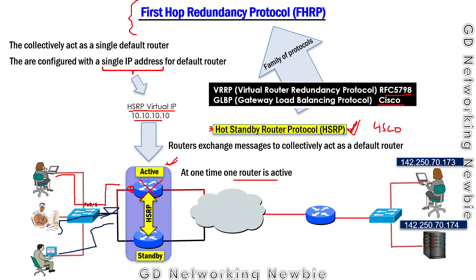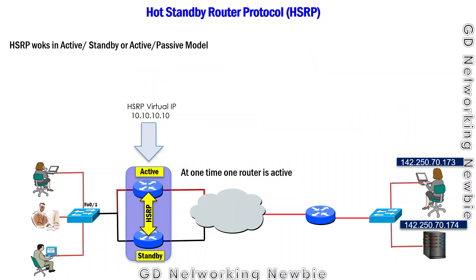HSRP works in an active-standby model: one router is in active mode and the second is in standby mode. This is also known as the active-passive model — one is active and one is passive. An important point is that at any one time, only one router will be active.